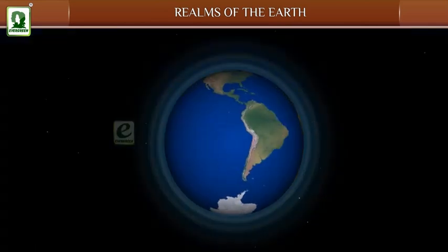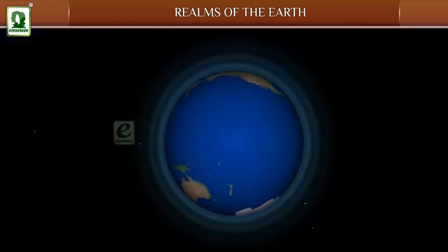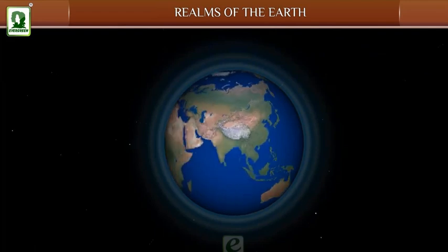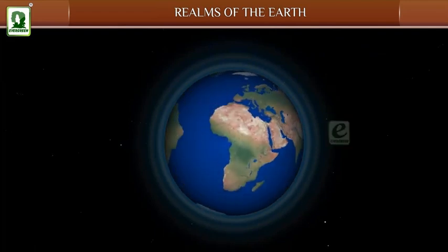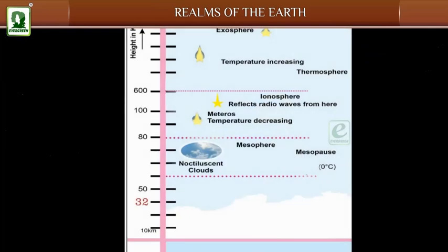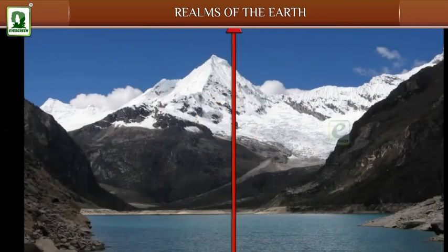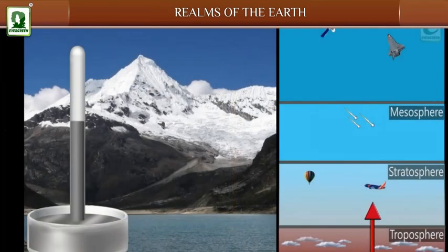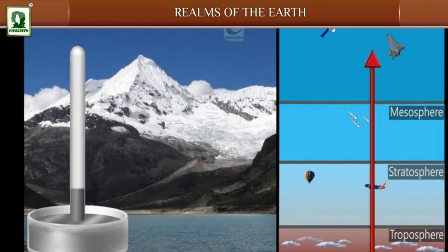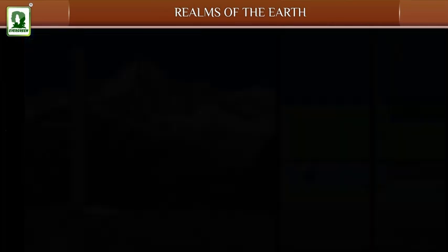The atmosphere is a blanket of gases surrounding the earth and held in place by Earth's gravitational pull. The atmosphere extends up to approximately 1600 kilometers above the surface of the earth. The density of the atmosphere varies with height. As we go up, the atmosphere thins considerably until it gradually merges with space.